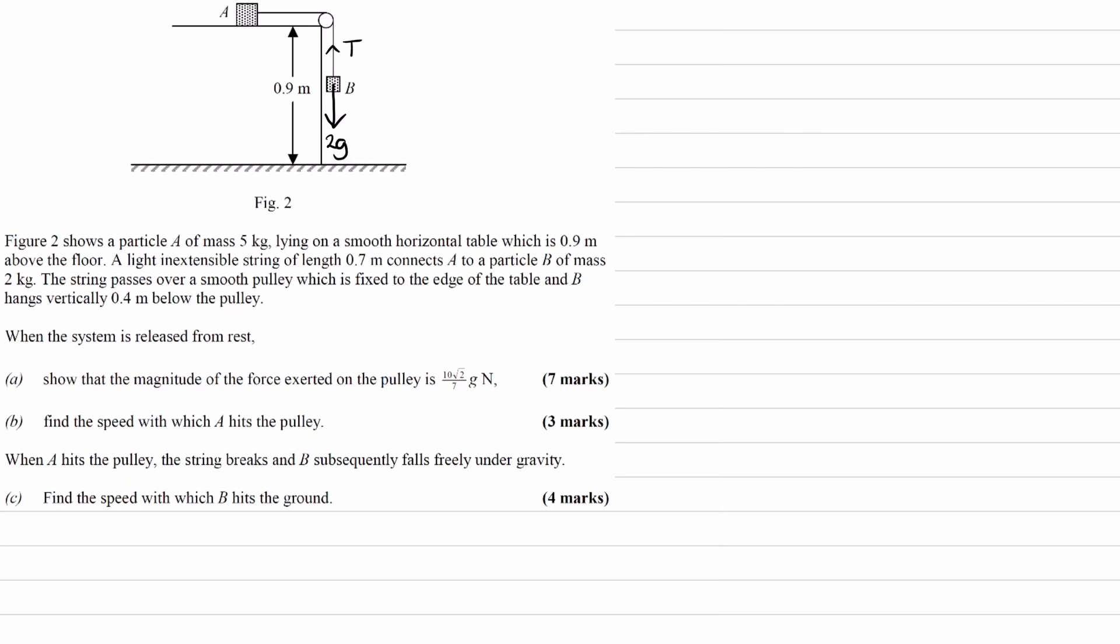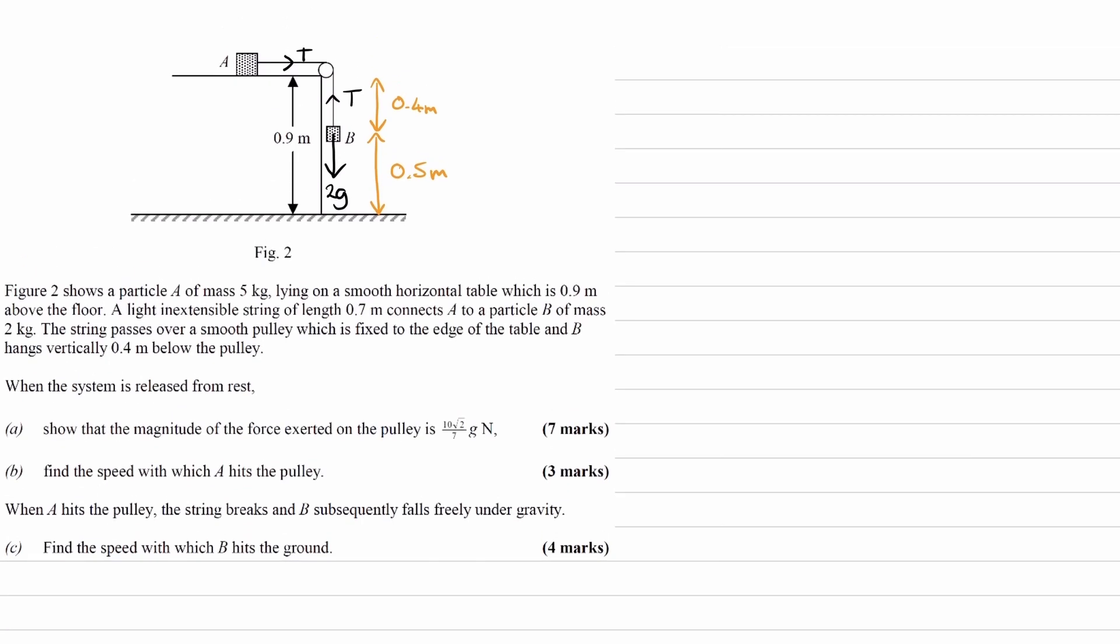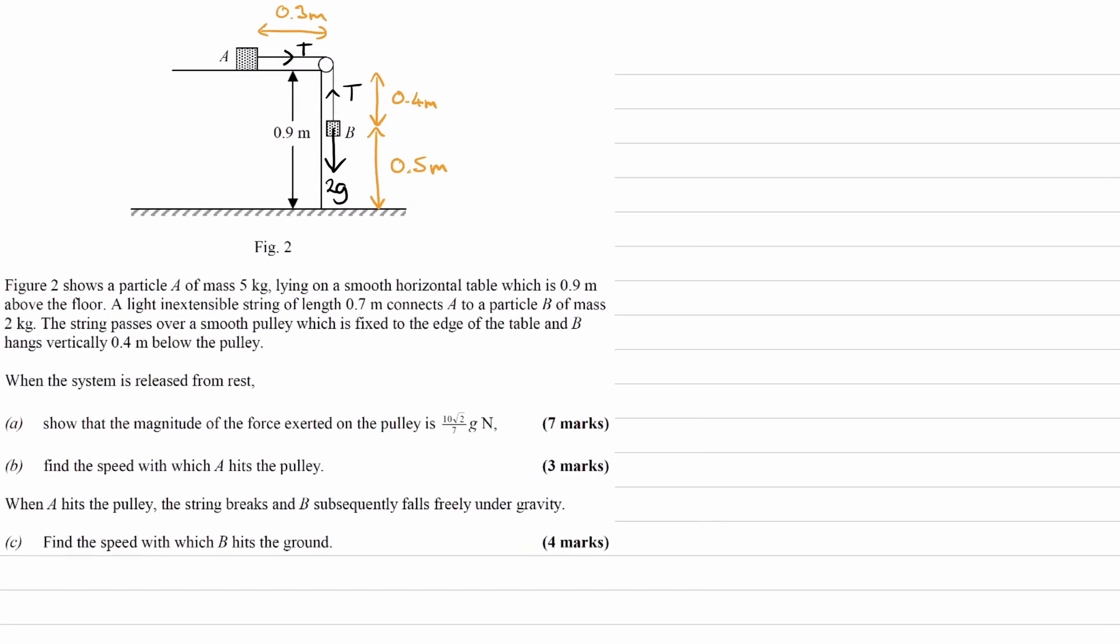I'll also draw the tension T on both A and B. I'm not drawing the weight force for A since it's not horizontal and won't affect our equations of motion. There's also no friction force. For A, the only force is the tension force horizontally. B hangs vertically 0.4 meters below the pulley, so this length here is 0.5 meters, as the two add up to 0.9. Since the total string length is 0.7 meters, the top horizontal length must be 0.3 meters. So we have our forces and distances.